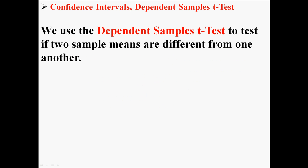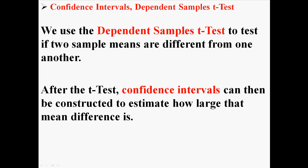Remember that we use the dependent samples t-test to test if two sample means are different from one another. After doing the t-test, if we reject the null hypothesis, we can construct confidence intervals to estimate how large that mean difference is. If it's just a small difference or if the two means are very different from one another, we can estimate that difference to see how large it is.